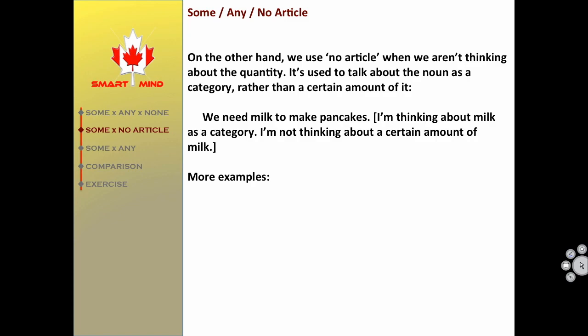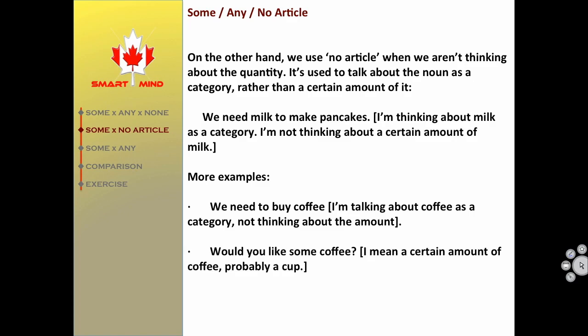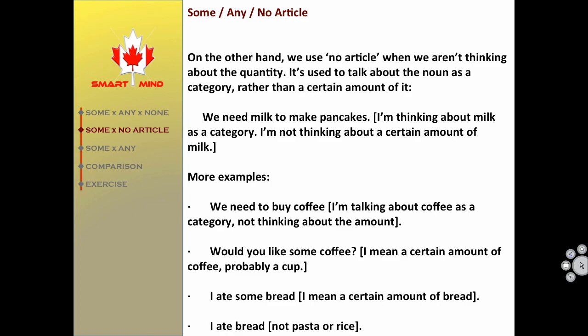More examples. 'We need to buy coffee.' I'm talking about coffee as a category, not thinking about the amount. 'We would like some coffee.' I mean a certain amount of coffee, probably a cup. 'I ate some bread.' I mean a certain amount of bread. 'I ate bread' — not pasta or rice.